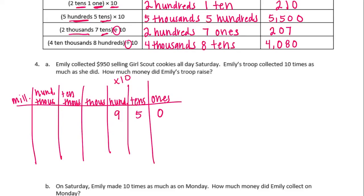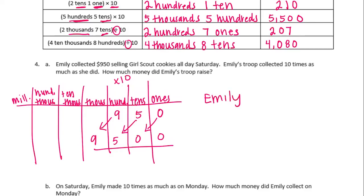Each digit is going to move one place to the left in the place value chart because it's getting one place value bigger — we're multiplying by ten. So I move the nine, the five, and the zero each one place left, then add a zero as a placeholder. So she collected nine thousand five hundred dollars. Emily's troop raised nine thousand five hundred dollars.